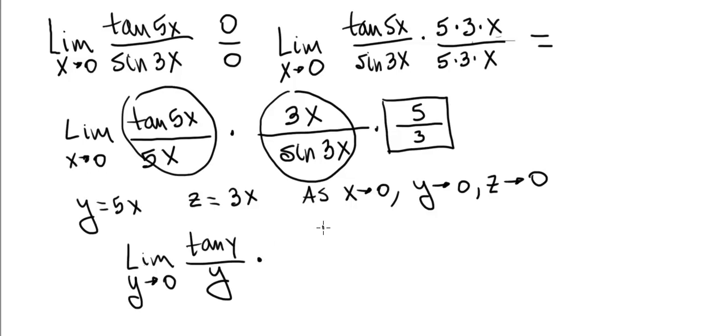This is times 1 divided by the limit as z goes to 0 and that would be sine of z divided by z. Notice that if I just flip this part right here I get z over sine z, that's 3x over sine 3x, and then over here times 5 thirds.